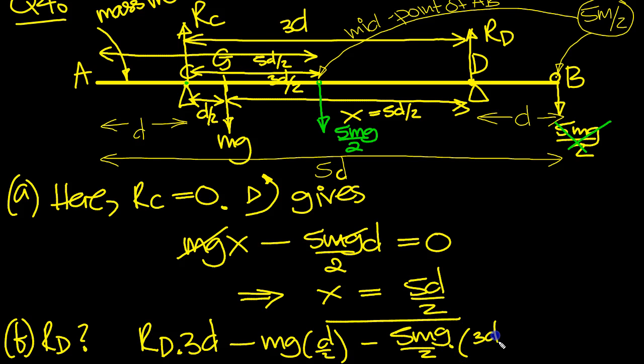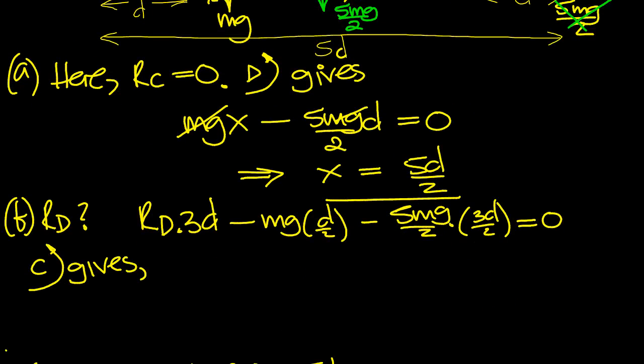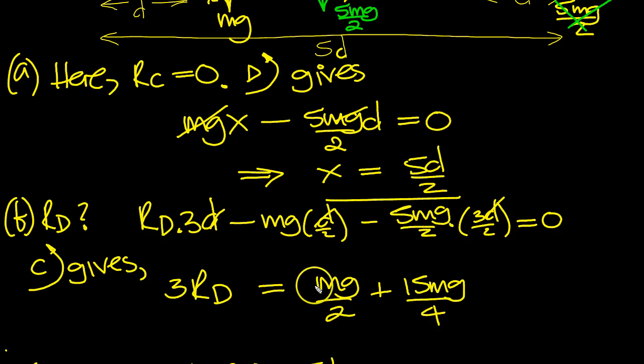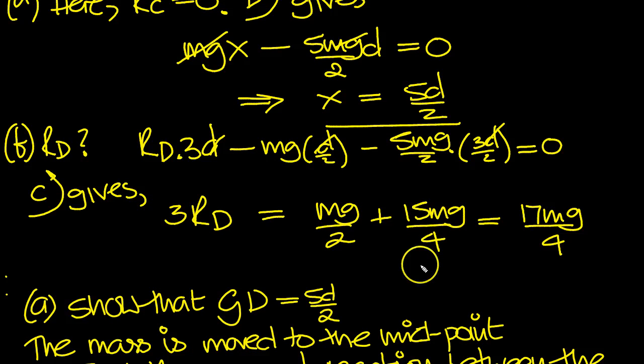So that tells us then RD, these cancel all the way through, so 3RD is equal to MG over 2 plus 5MG times 3 is 15MG over 4, so this is 2 over 4 plus 15 over 4 is 17MG over 4.